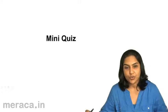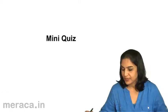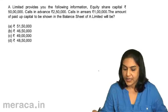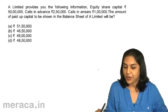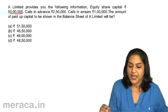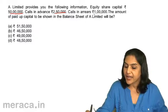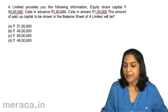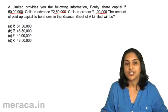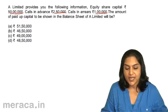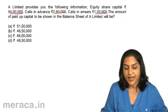Let us now take a short quiz to test our understanding so far. First, a company provides you the following information: Equity share capital 50 lakhs, Calls in advance 2 lakh 50,000, Calls in arrears 1 lakh. The amount of paid-up capital to be shown in the balance sheet of A Limited will be: A. 51 lakh 50,000. B. 46 lakh 50,000. C. 49 lakh. D. 48 lakh 50,000.